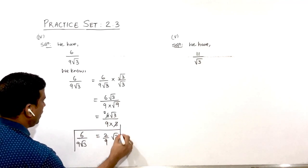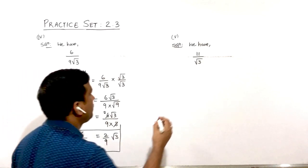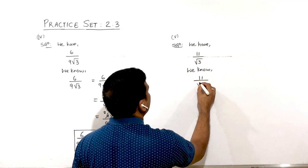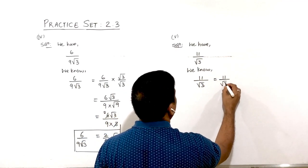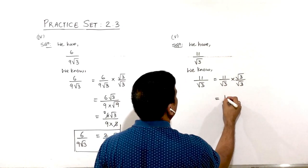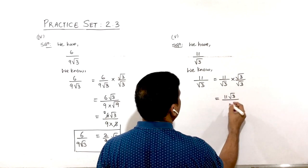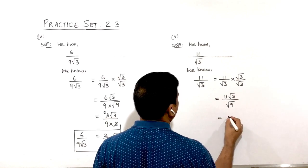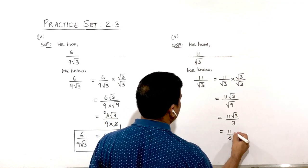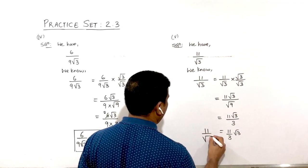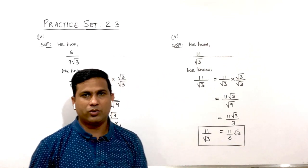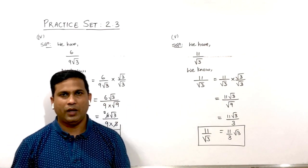Similarly, for the last sum: the denominator has √3, so multiply and divide by √3. This gives 11√3/(√3 × √3) = 11√3/√9 = 11√3/3. Therefore the rationalized form is 11/(3√3). I hope you have understood Practice Set 2.3. Thank you.